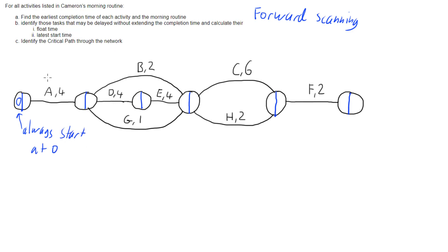Then we look at our next activity. Activity A takes four minutes to complete. We can't get to the next node until we have finished activity A, and it takes four minutes. We started at time zero, so we can't finish activity A until four minutes in. That means we can't start the following activities until four minutes in.